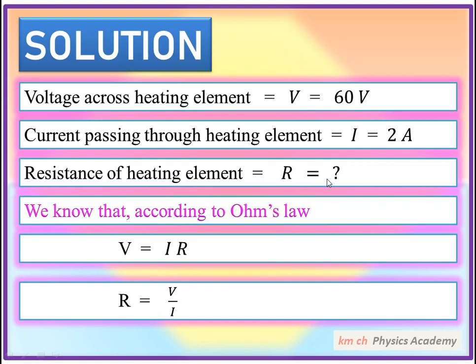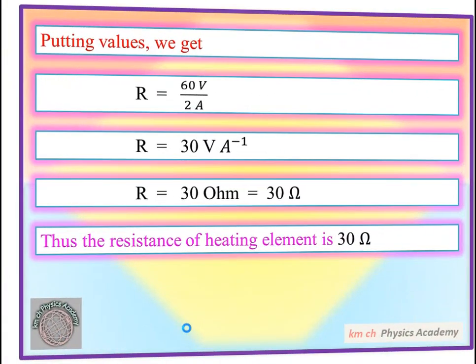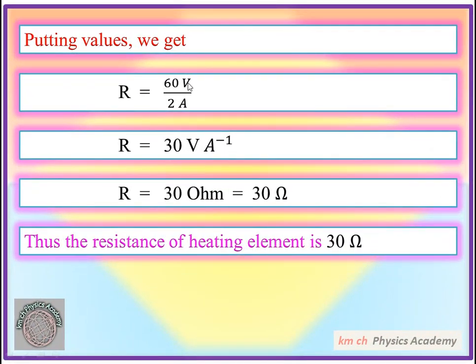We know that according to Ohm's law, V is equal to IR. We know that R is equal to V over I. And we have a solution for it. R is equal to 60 volt over 2 ampere and this is ohm. Resistance is equal to 30 ohm. 30 ohm is a resistance.